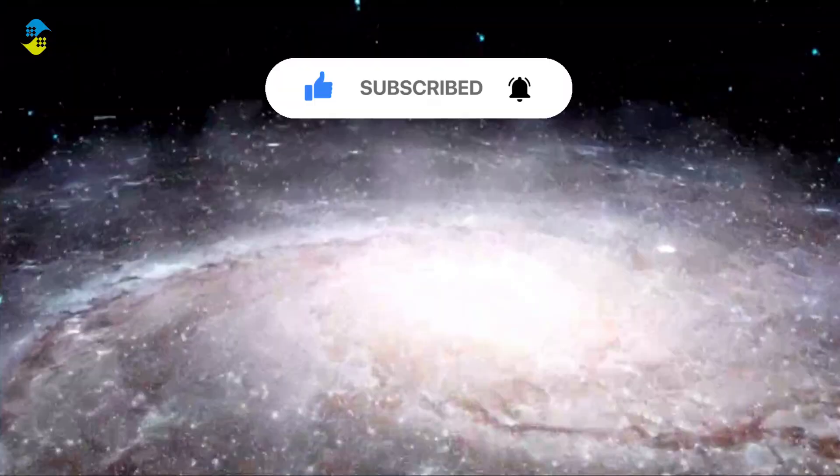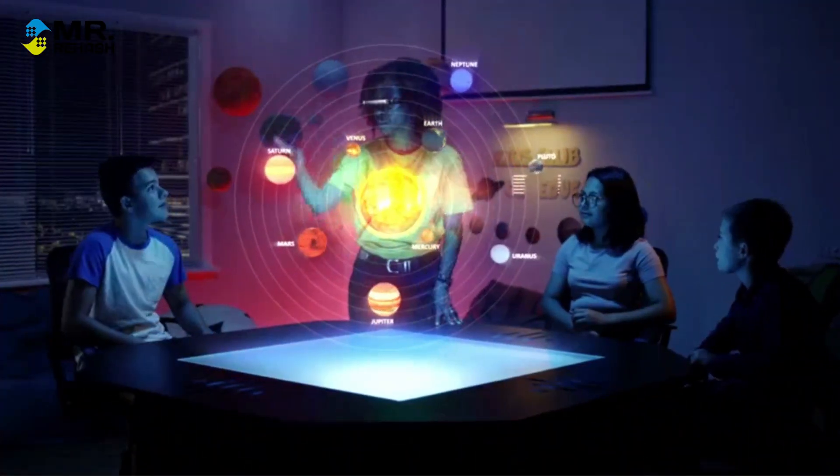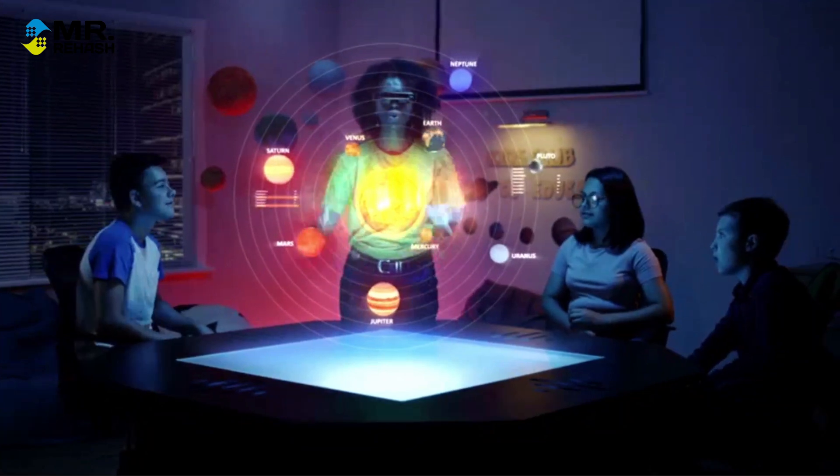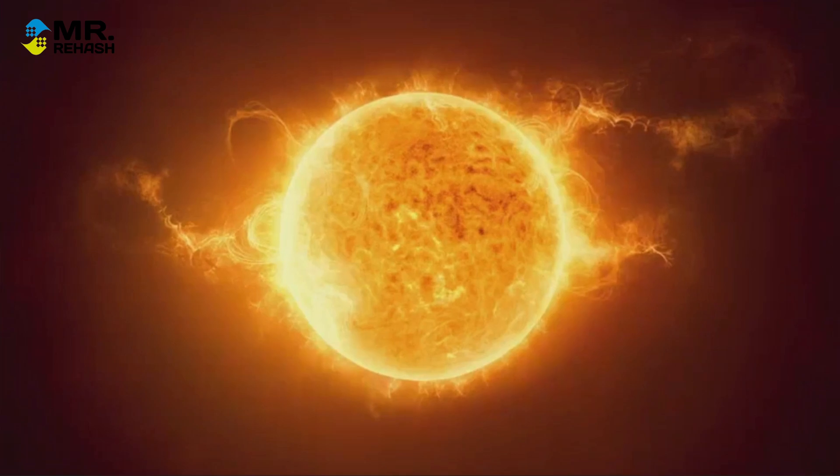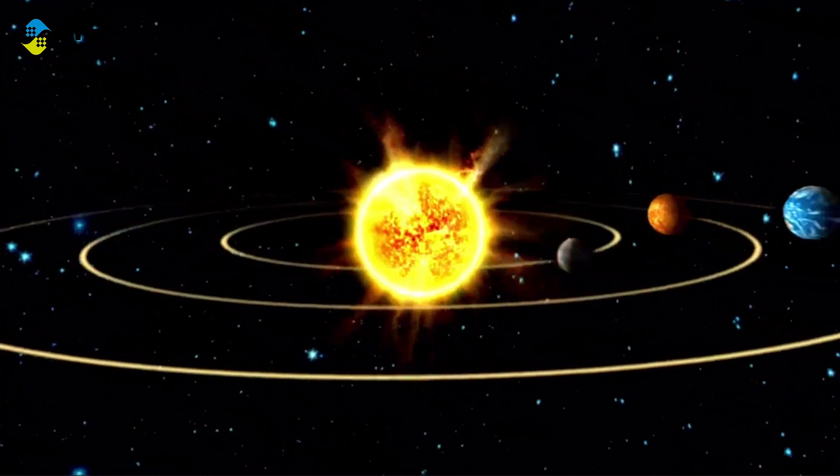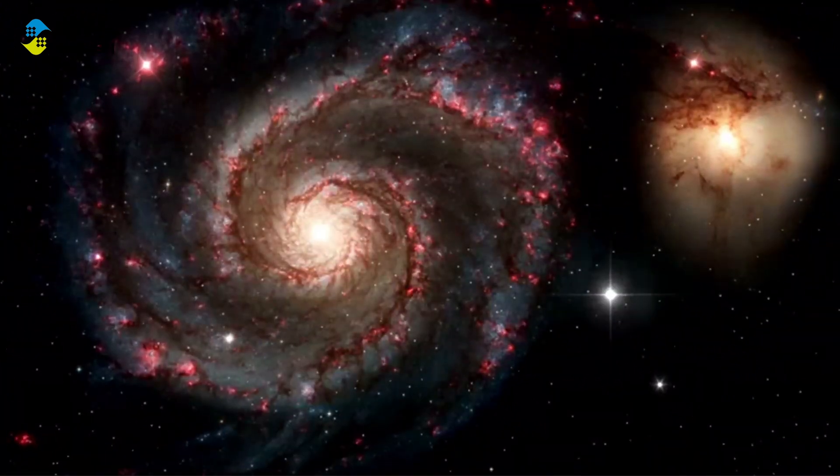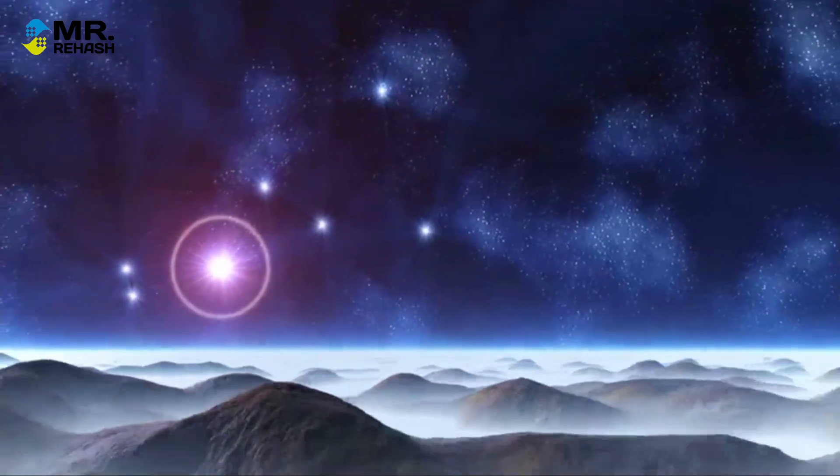Alright, let's embark on this cosmic journey to understand why other planets are not as visible as stars. We first need to appreciate the incredible brightness of stars. Our Sun, for instance, is a star and it's so luminous that it outshines every other object in our night sky. The next brightest stars are many light years away, which is why they still appear as tiny dots of light to us here on Earth.